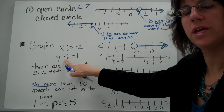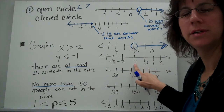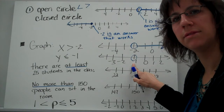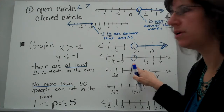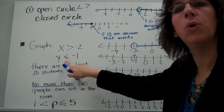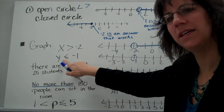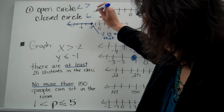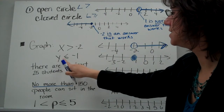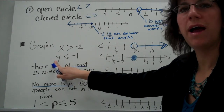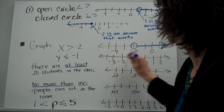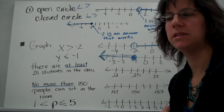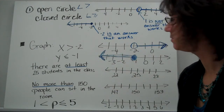y is less than or equal to negative 1. I find negative 1 on my number line. Is negative 1 part of the solution set? Absolutely — because the symbol is less than or equal to. That little extra line on the bottom tells me to color it in. You use a closed circle for less than or equal to, or greater than or equal to. So I shade all the numbers less than negative 1, including the arrow — because even negative 112 would be an option.